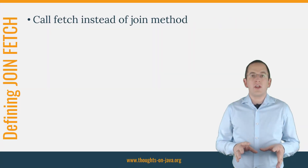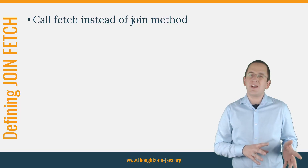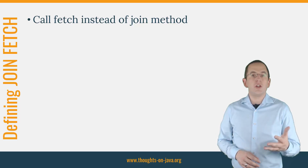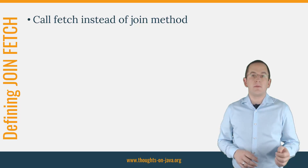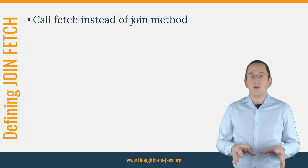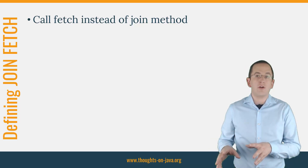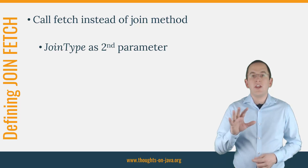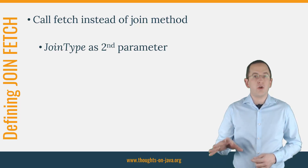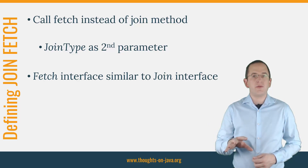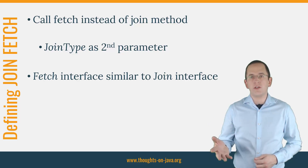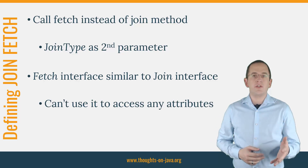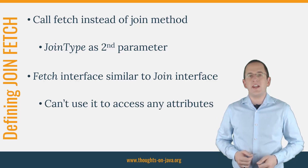Working with the join fetch clause in a criteria query is a little bit special. First of all, you can't create it using the join method — you need to call the fetch method instead. If you want to define a left join fetch or a right join fetch clause, you need to provide a JoinType enum value as the second parameter. The second big difference is the return type of the fetch method. The Fetch interface is very similar to the Join interface, but it doesn't define a get method, so you can't use it to access any attributes of the join-fetched entity.